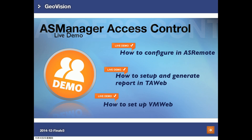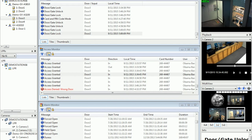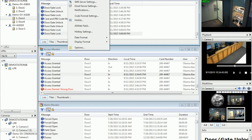For the third part of the live demo, I'll show you how to configure AS Remote, how to set up TA Web, how to generate reports for payroll, and how to set up VM Web. To configure AS Remote, first go to AS Manager, Tools, Servers, and make sure the remote monitor server is enabled.